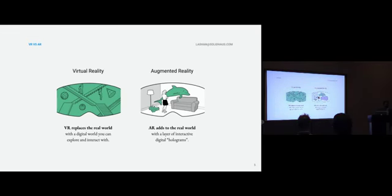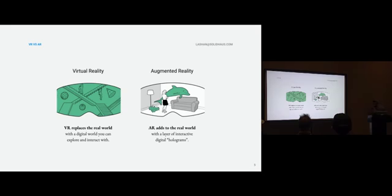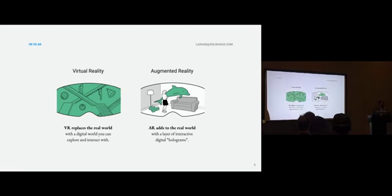Let me go through the differences. My personal definition: virtual reality replaces the real world — everything goes away and everything is digital. AR, on the other hand, is adding to the real world — it's adding an extra layer. I like to call it your hologram: you're looking at this room and there's a hologram there that you can interact with. There's also mixed reality, or MR, but in my opinion MR is just rebranded augmented reality. At its core, it's VR and AR — those are the two components.